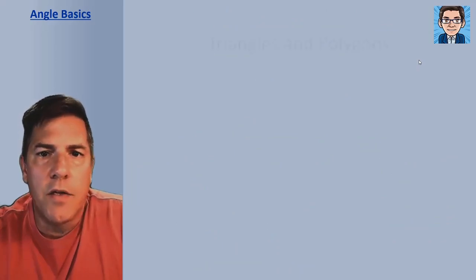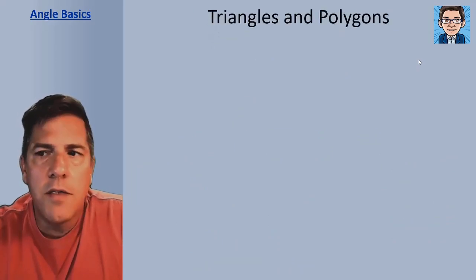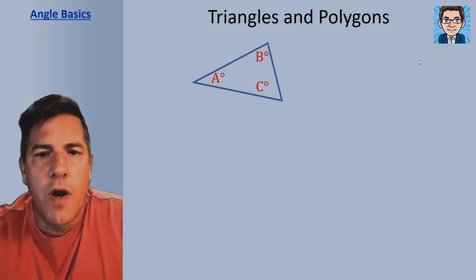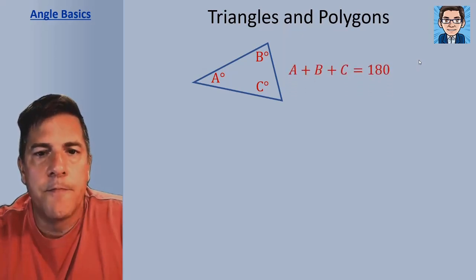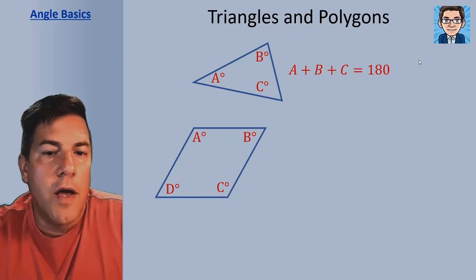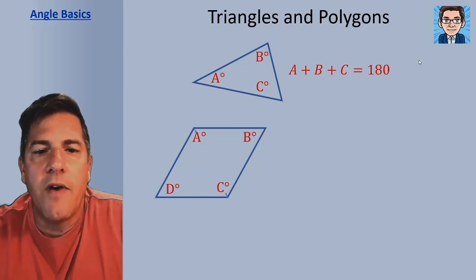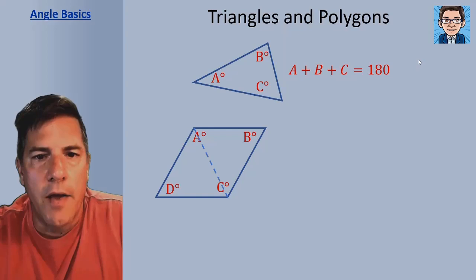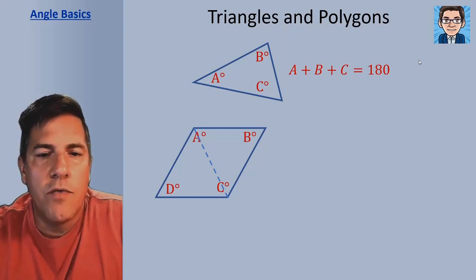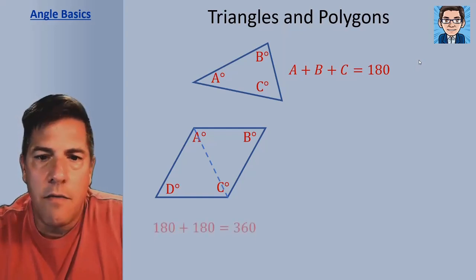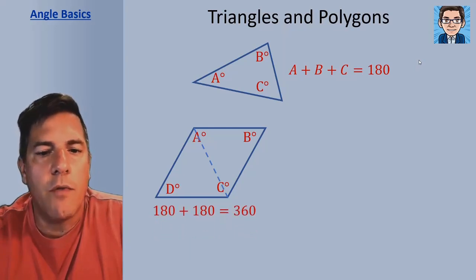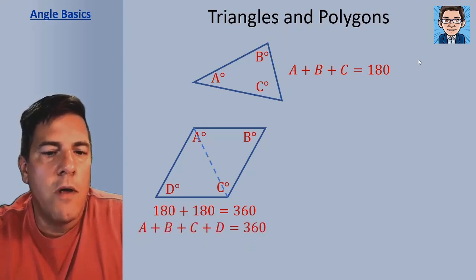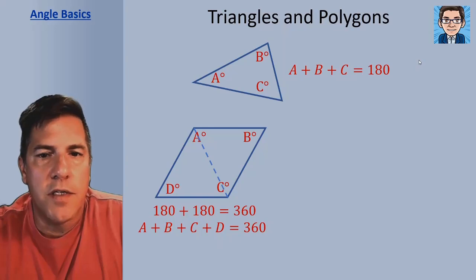The next thing we're going to look at is triangles and polygons. A triangle — the three angles of a triangle, no matter what the triangle looks like, whether it's a right angle or not — are going to add up to 180 degrees. Now let's take a look at a quadrilateral. We can divide that into two triangles, so the total of those four angles combined is going to be the same as two triangles: 180 plus 180, or 360 degrees.